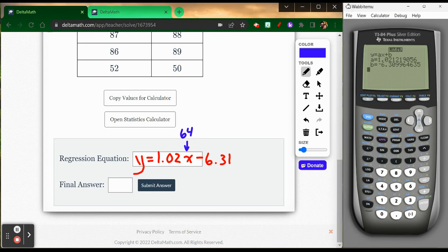So I'll go back to my calculator and let the calculator do all of the heavy lifting for me. I've got 1.02 times 64 minus 6.31. And I get this really nice answer, 58.97. And they said rounded to the nearest integer. So 58.97 rounded to the nearest whole number would be 59.